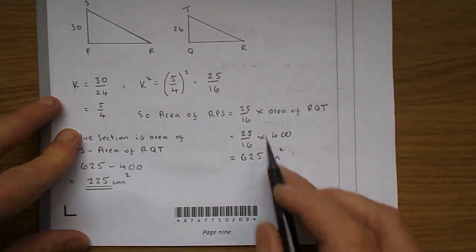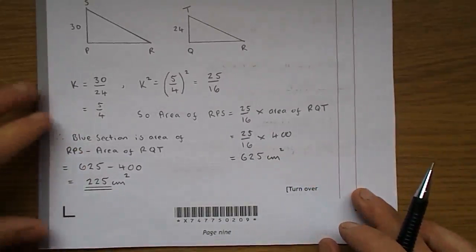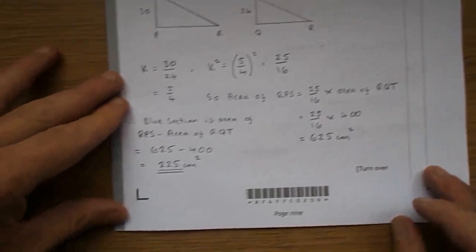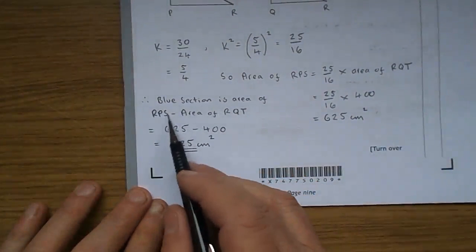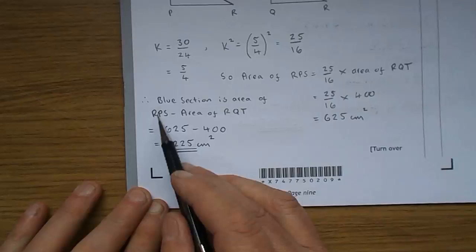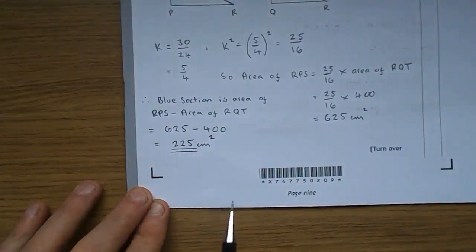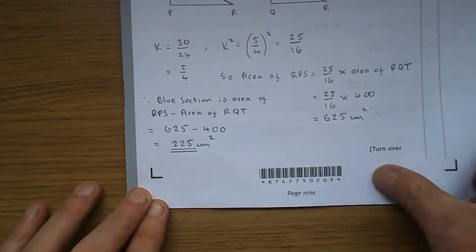So what does that mean? Well, it means that the area of RPS, the bigger triangle, is 25 over 16 times the area of RQT. We were told what RQT was. RQT was 400, so here's me just reiterating that the blue section is the area of RPS, take away the area of RQT. So that's 625, take away 400, 225.